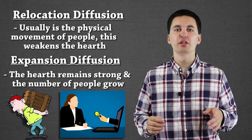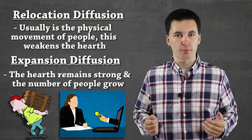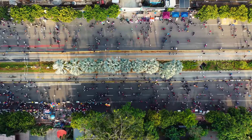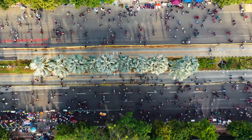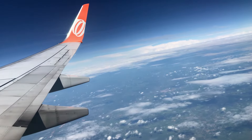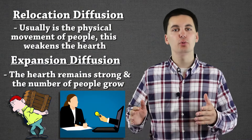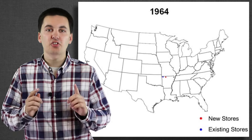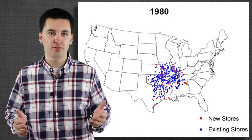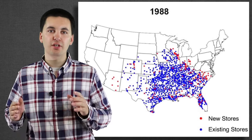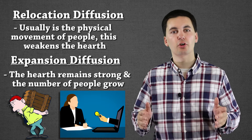There are two main types of diffusion: relocation diffusion and expansion diffusion. Relocation diffusion is when a particular item or group of people just moves locations and the hearth actually becomes weaker because of it. This group physically picks up and moves to a different area, so the hearth starts to die off — in some cases it completely dies off. Expansion diffusion is different because the hearth is going to remain strong and not die off. The key difference to remember is that in relocation, the hearth becomes weaker, and in expansion the hearth will remain strong.